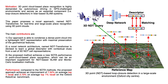Secondly, we propose a novel network architecture named NDT Transformer, which is devised to learn a global descriptor with contextual clues from a set of 3D NDT cell representations. Thirdly, the proposed approach achieves a new state-of-the-art performance in point cloud-based place recognition, which can be an important supplement for NDT-based SLAM or Monte Carlo localization.